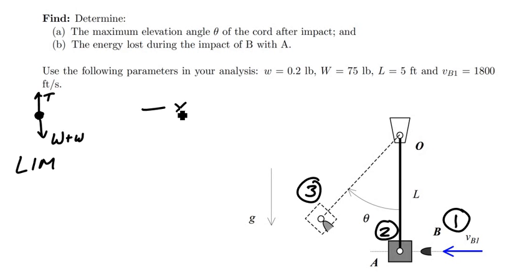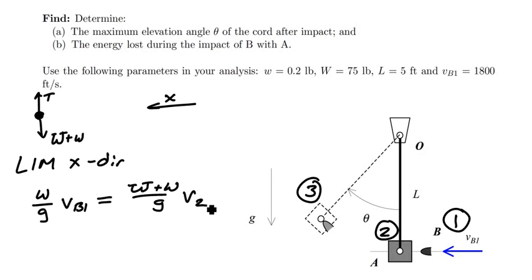Then what I'm going to have here is the initial momentum of the system will be the mass of block B, which will be little w divided by g. And by the way, I'll put a little hat on top of my big W to make it distinct here for you. And then I'll multiply that by its initial speed, which is VB1. And then post-impact, because the two objects stick together, I'll have big W plus little w divided by g, the total mass of the system, times the speed I'll call V2.